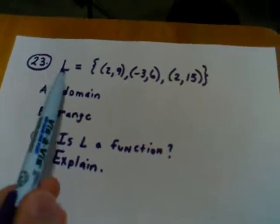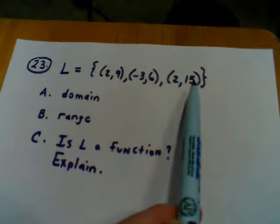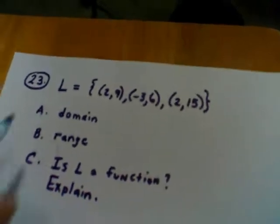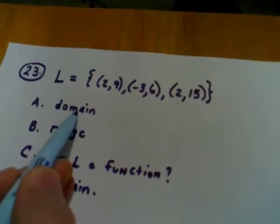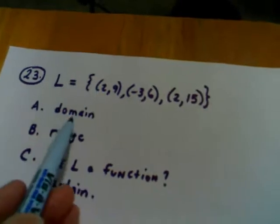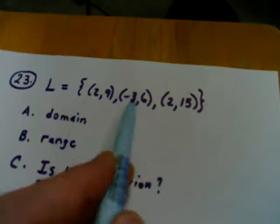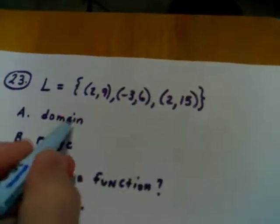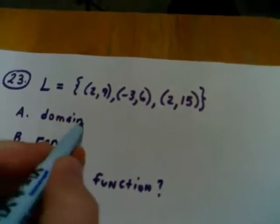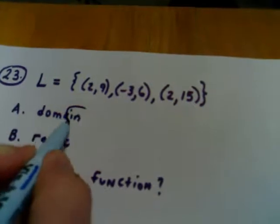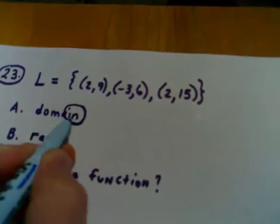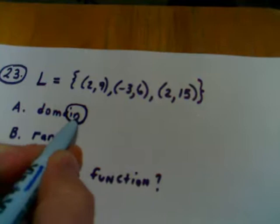Now, L is a relation, meaning it's a collection of ordered pairs. If I want to find the domain of L, the domain is another name for the X values. It's another name for the input. One little trick I want to show you is notice that the word domain, the last two letters of it are 'in'. It's kind of a clever little trick.